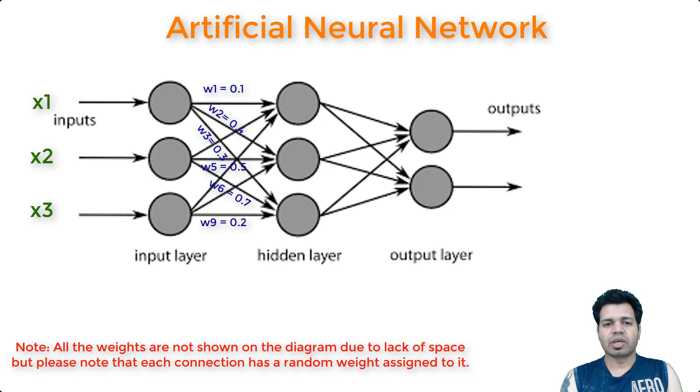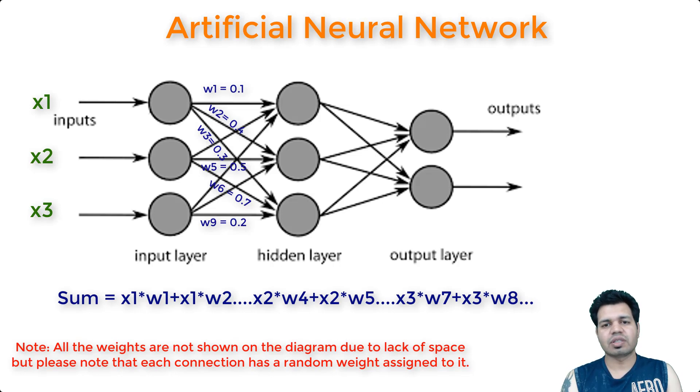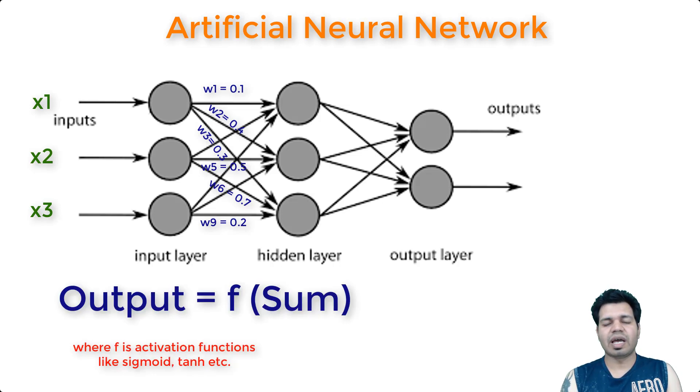After that, a weighted sum is then calculated with each of the connections that are directed to this particular node or neuron. This sum is then passed to the activation function, which essentially transforms the result to a number between zero and one. The result of this transformation from the activation function is then passed to the neuron in the next layer.